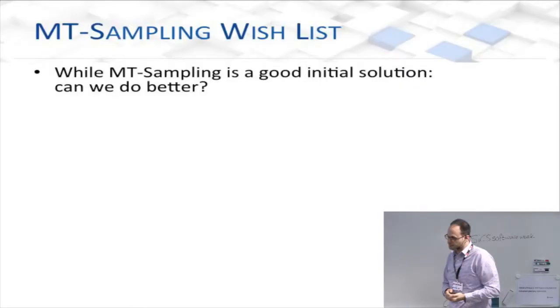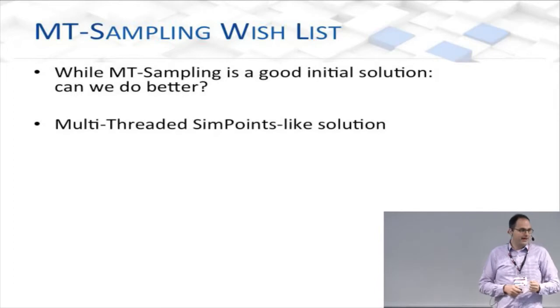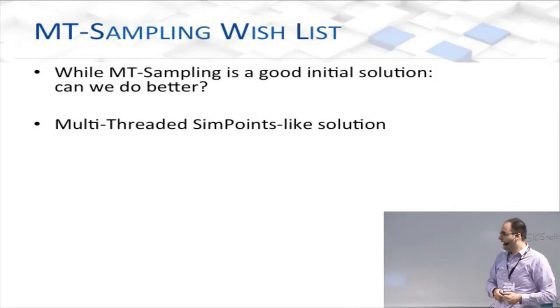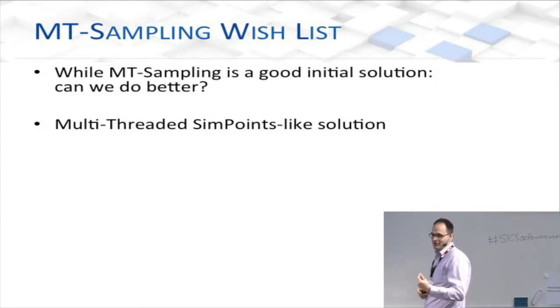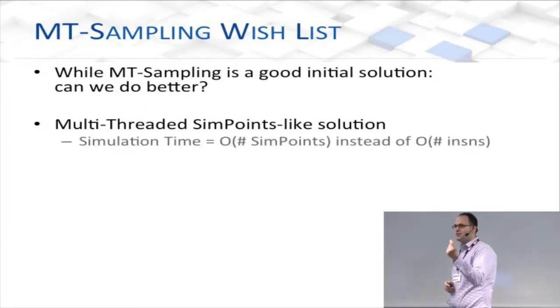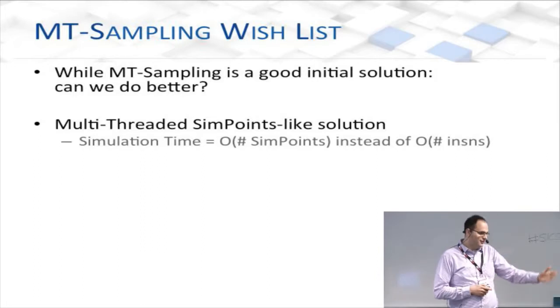This is a good start, but maybe we can do better. 10x is nice, 20x is nice, but where's 100x speedup? That's what we saw with the original SimPoint implementation. We want something that looks like SimPoint — simulate just 1% or even smaller of an application — but do it for a multi-threaded application targeting an 8-core Qualcomm processor in our pocket. We want simulation time to be on the order of representative regions, not instructions — and we want it to be fast and easy to use.